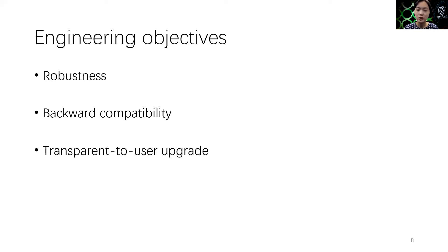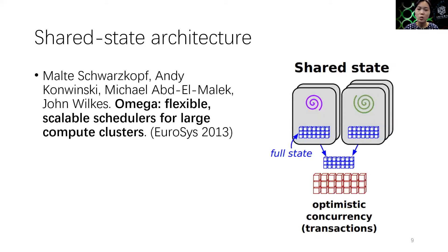Finally, the system upgrades should be transparent to both the internal users and cloud clients of Alibaba. We start by investigating existing scheduler architectures and found that Omega can be a potential solution. Omega proposed a shared state architecture. In Omega, a master maintains the cluster state, which indicates the availability of resources in each machine in a cluster. There are multiple schedulers, each of which maintains a local copy of the cluster state by synchronizing with the master copy periodically.